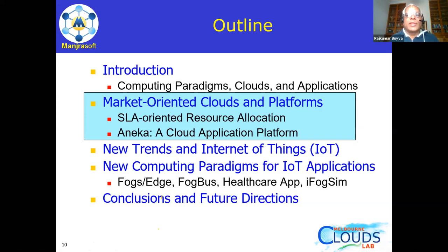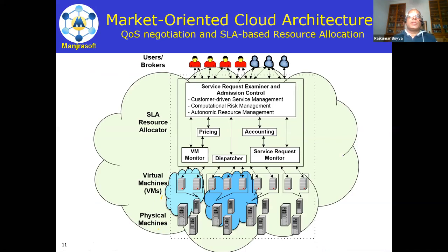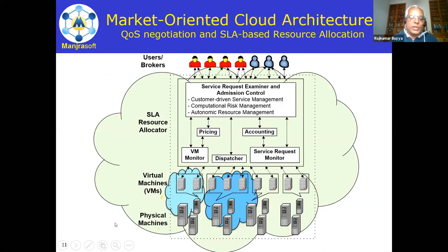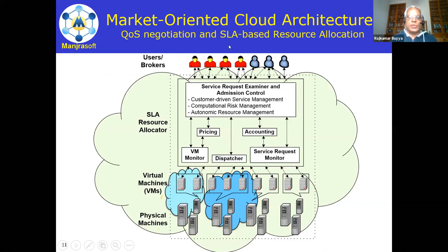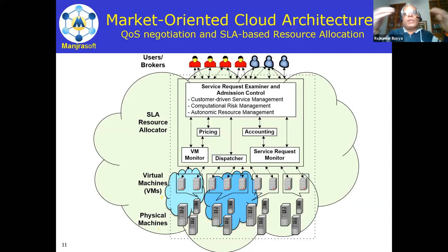Going deeper inside the cloud: at the bottom is physical machines interconnected, which can be in one place or across multiple locations worldwide. At the top are users. Users who want to run applications are one type; users who want to use an application service are another. When users make a request to the cloud, they need to define their requirements — for example, a university subscribes to Zoom with defined quality expectations as paid customers.